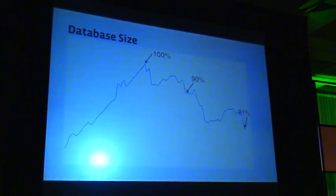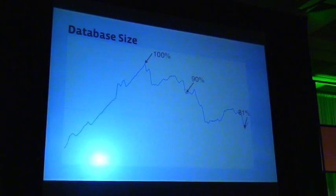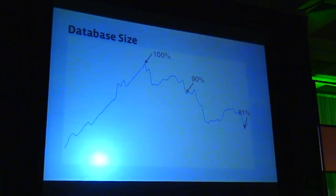This graph shows the average database size from one of our data centers. Up until the first red arrow, there is a linear increase — that's the typical growth of our database as users enter more data into Facebook. After starting to deploy compression gradually, we see drops. We have a 90% drop in one case and 81% by the end. These percentages take into account data growth, so it's not 90% of what it was at peak — it's 90% of what it would be if we were using uncompressed MySQL.